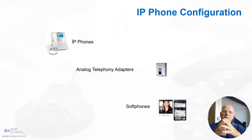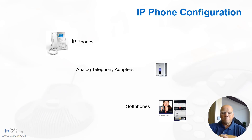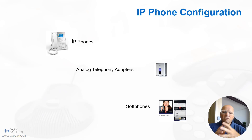In an Asterisk PBX system, there are three main types of devices that can be configured for voice communications. First, IP phones — these are dedicated hardware phones that connect directly to the IP network and communicate using VoIP protocols. Then you have analog telephony adapters, which convert analog signals to digital VoIP signals, so you can use your old analog telephone connected to an ATA. Finally, you have softphones — software applications that run on computers or mobile phones, providing a virtual phone interface.